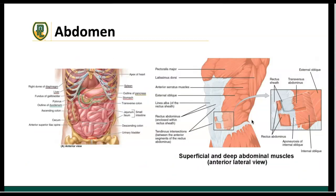Even though the abdominal cavity and the thoracic cavity are distinct, the two are interwoven. The diaphragm is just underneath the thoracic cavity — it's the connecting piece between the abdominal cavity and the thoracic cavity. The abdominal cavity houses all of our internal organs. In the upper right-hand quadrant, we have the large liver; in the upper left-hand quadrant, we have the spleen.